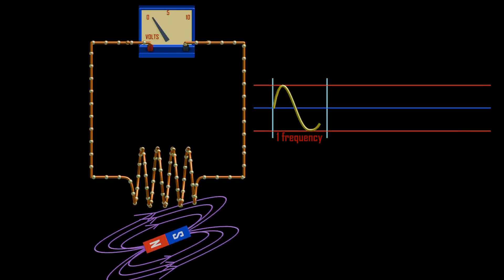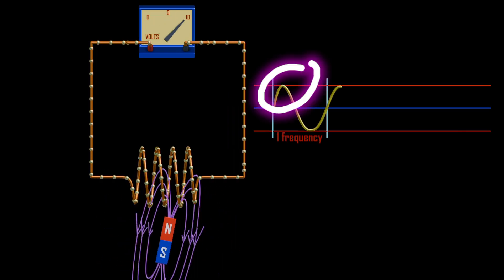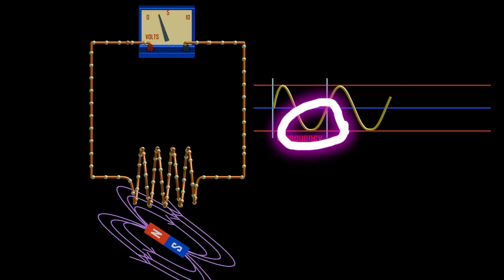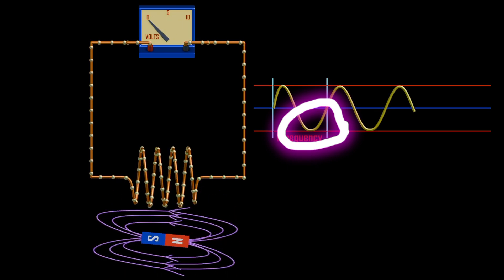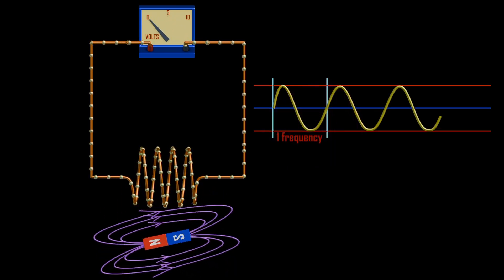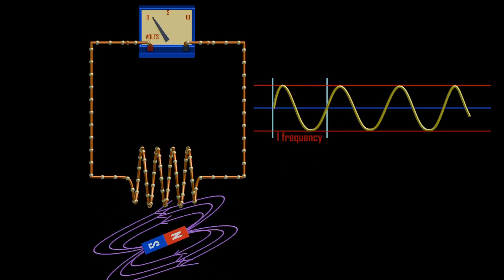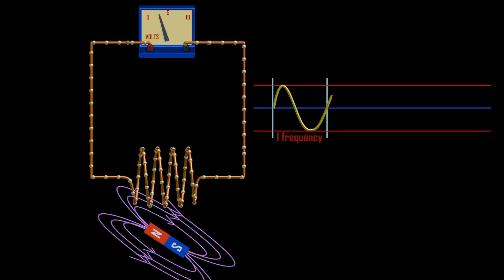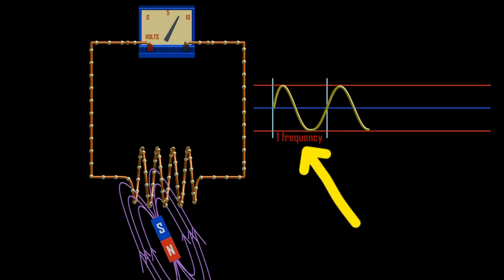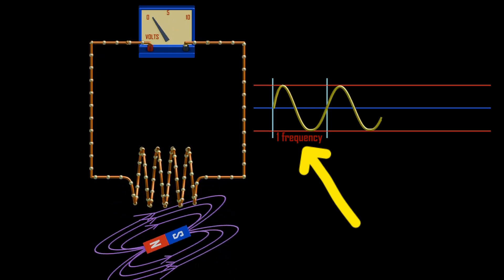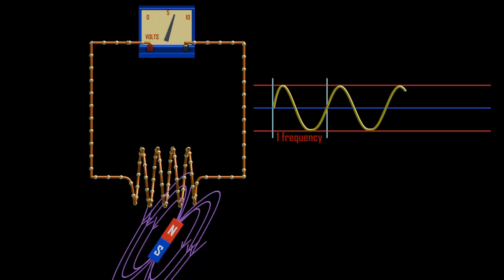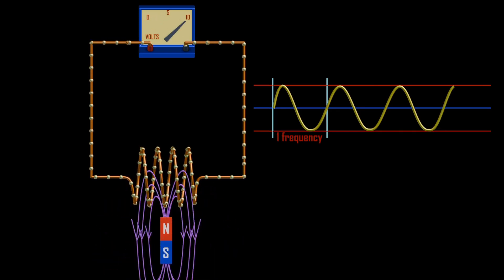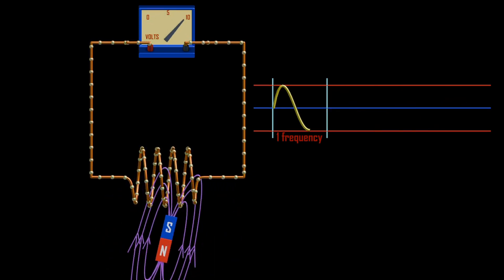With forward current plotted at the positive half and the reverse current plotted at the negative half. When the magnetic field cuts the coil with both its south and north pole, we will form one revolution, and this is what we call frequency. When the frequency of a phase is 50 hertz, it means it has gone 50 revolutions within one second.